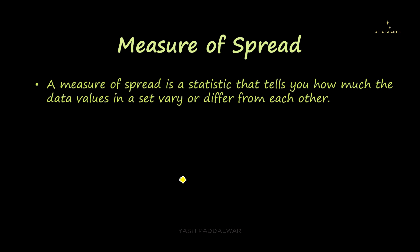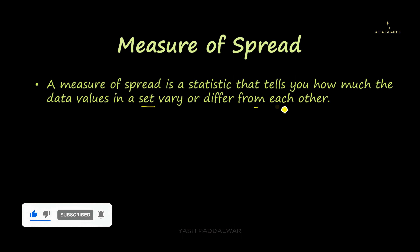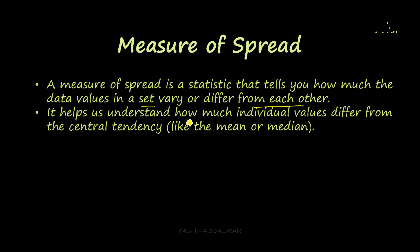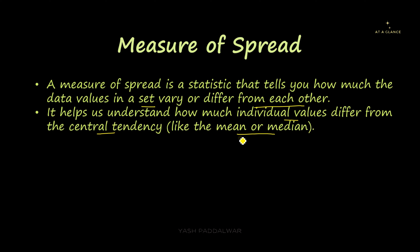A measure of spread is a statistical measure that tells you how much the data values in a set vary or differ from each other. In simple words, it helps us to understand how much individual values differ from the central tendency like mean or median. This measure of spread deals with the concept of how each data point is actually differing from the measure of central tendency, for example mean or median.